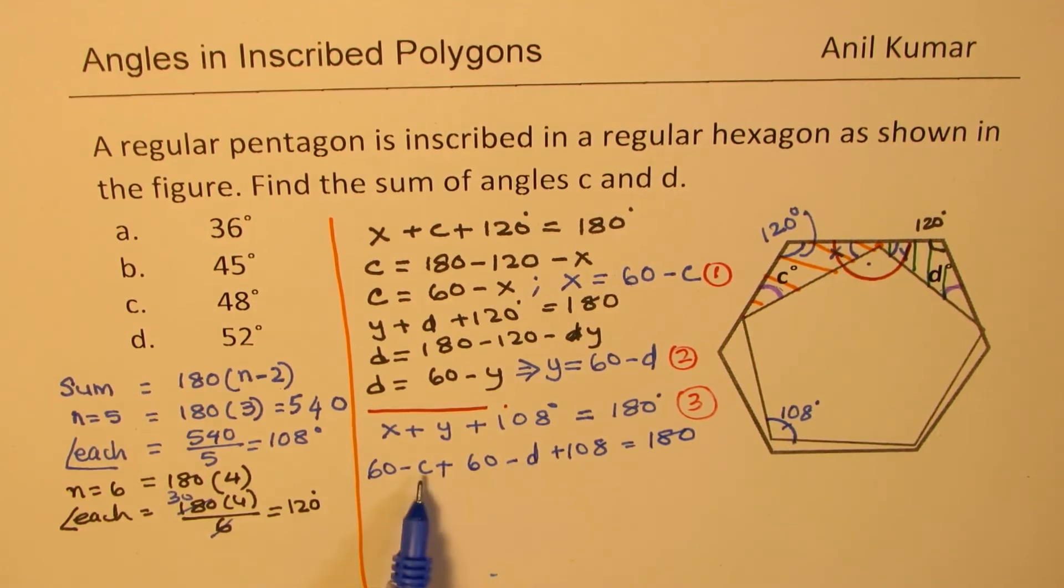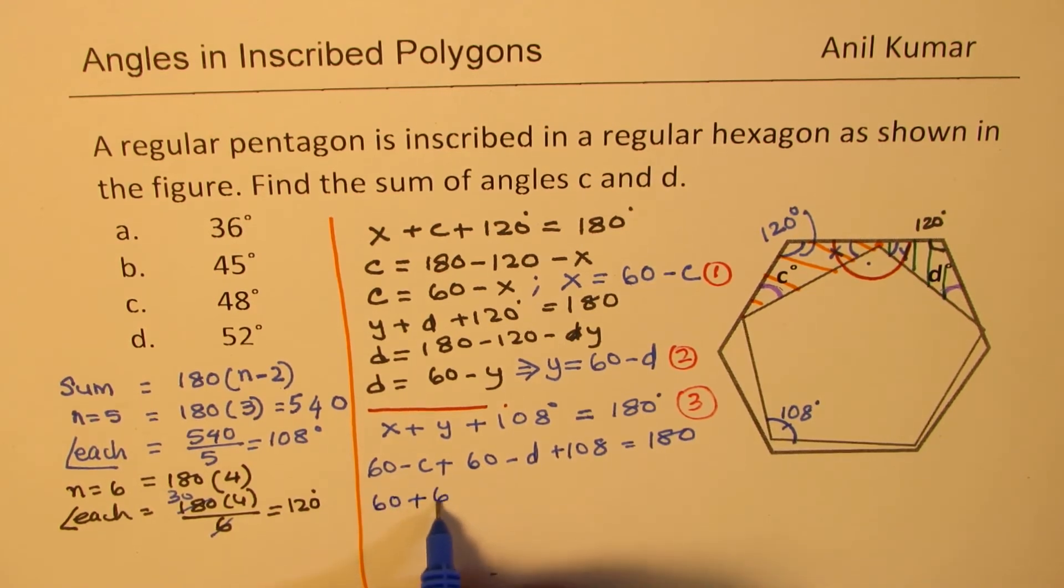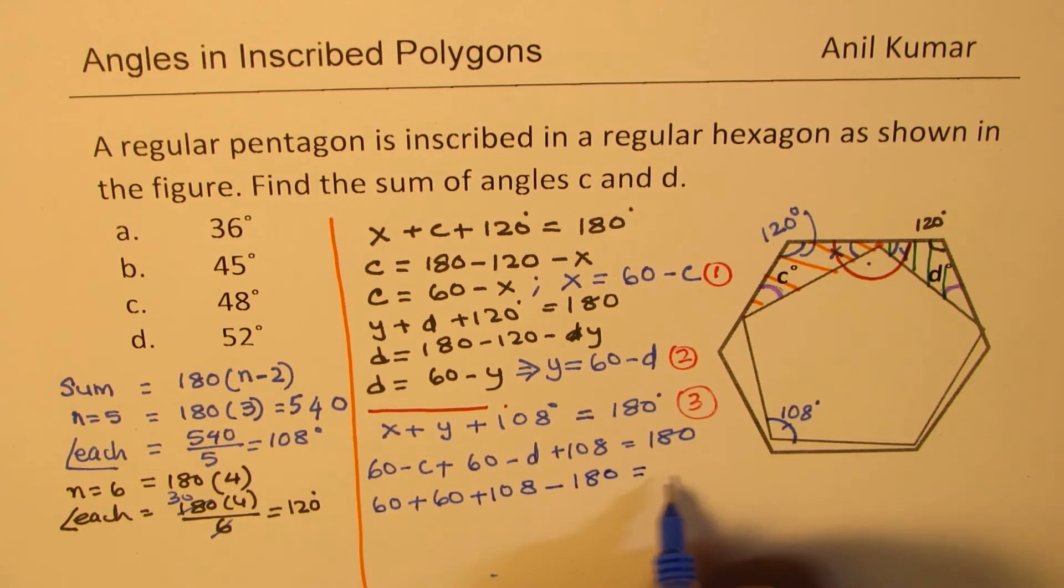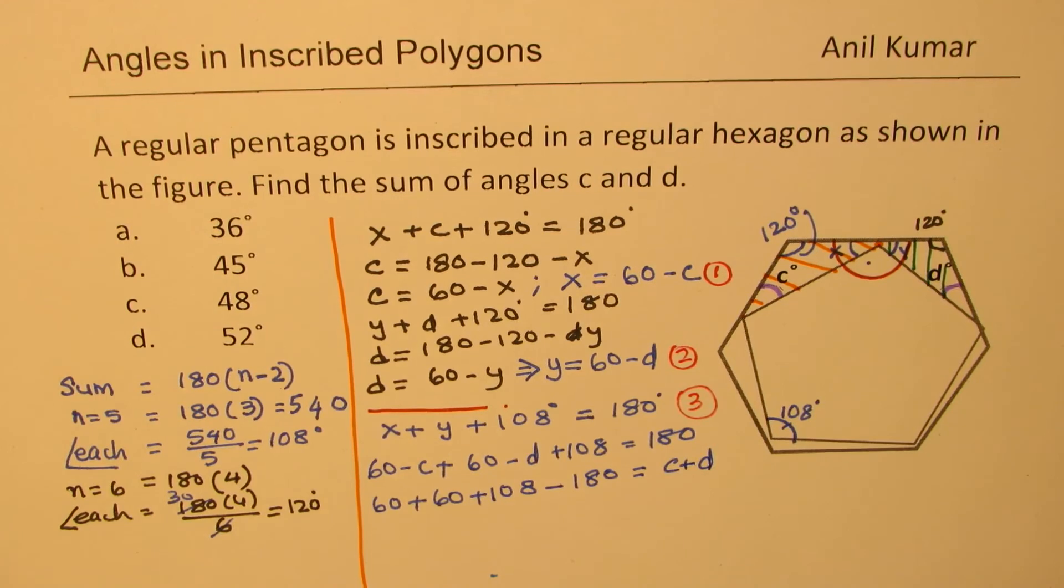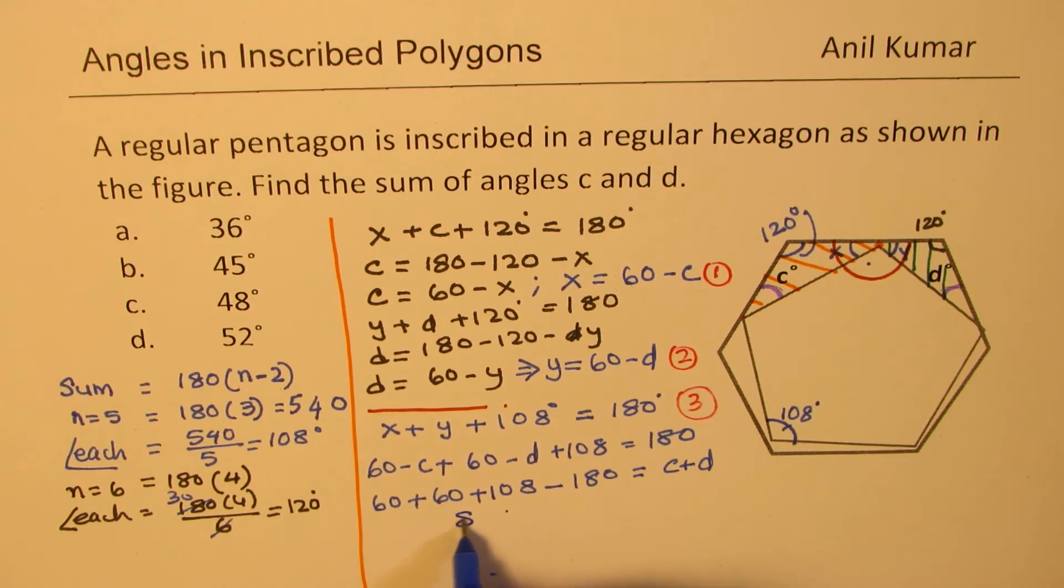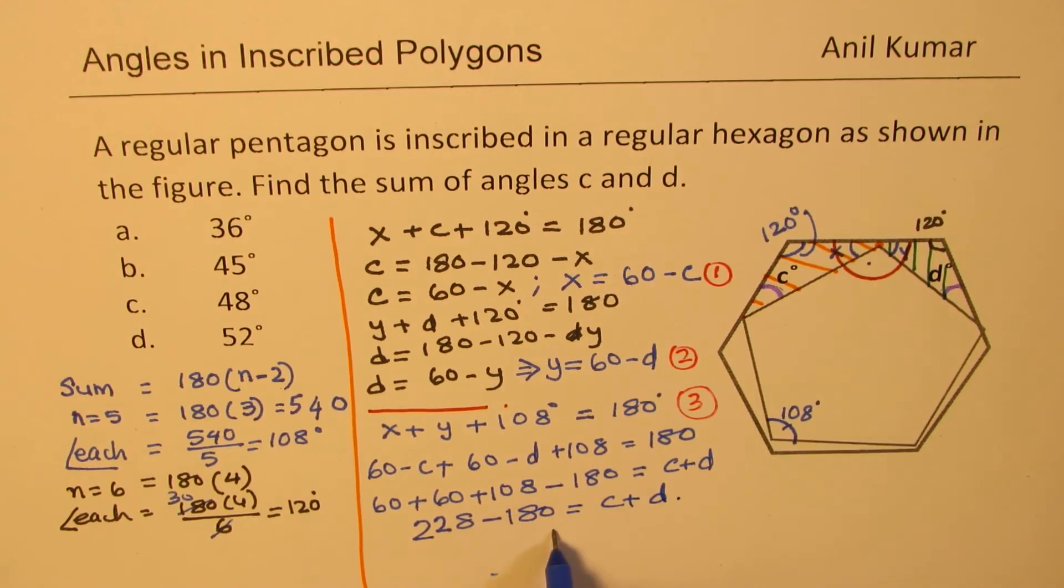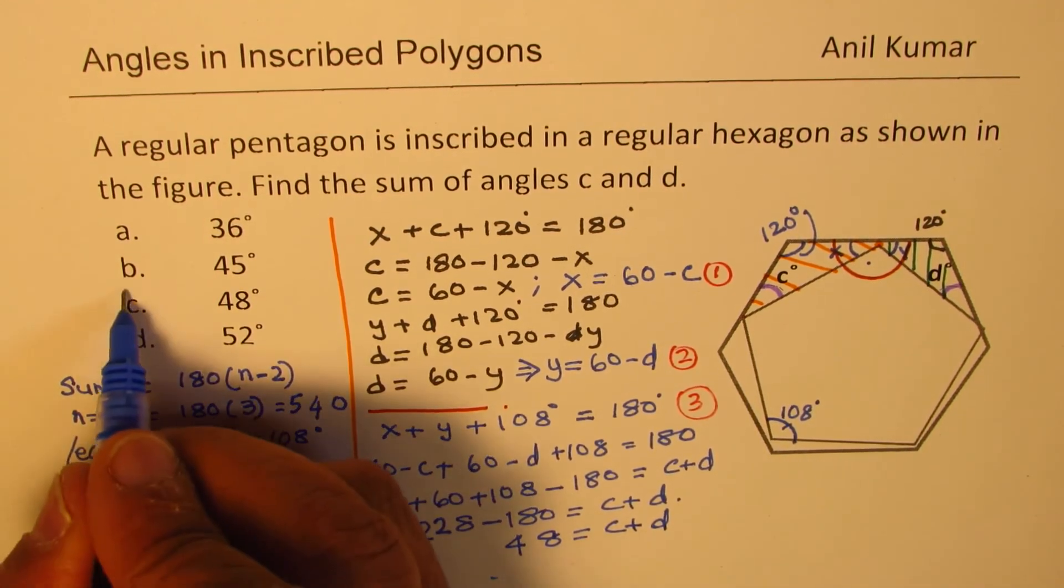So here, we can get sum of C and D by taking them on the right side. So 60 plus 60 plus 108 minus 180 is equal to C plus D, which we need to find. So now we can figure it out. So what we get here is 228 minus 180 is C plus D. So that gives you 48. So 48 is sum of angle C and D. So option C is the right option.